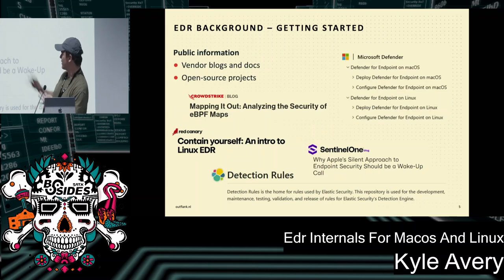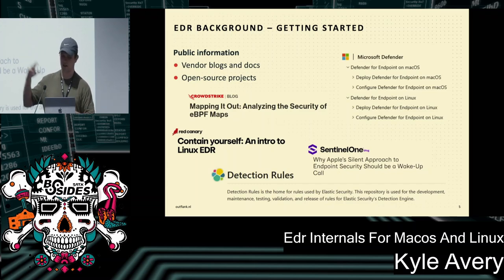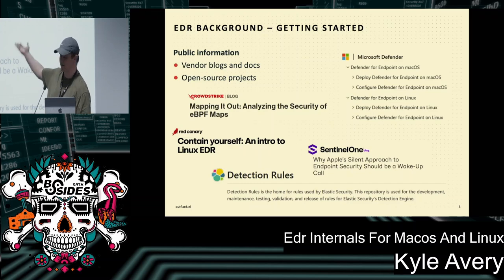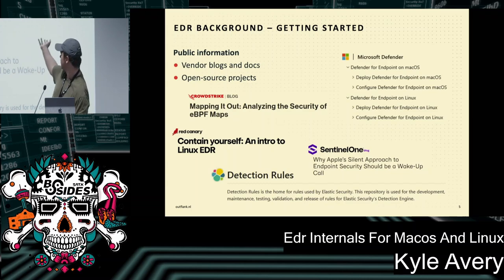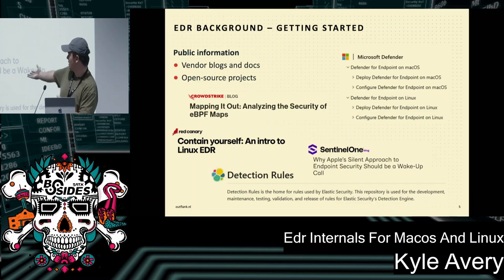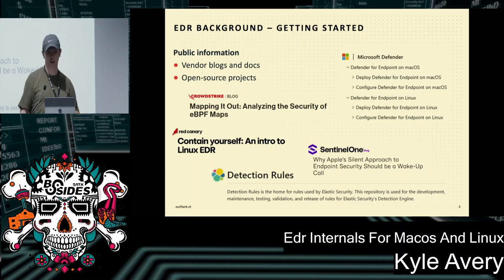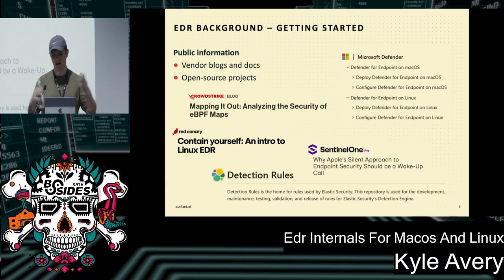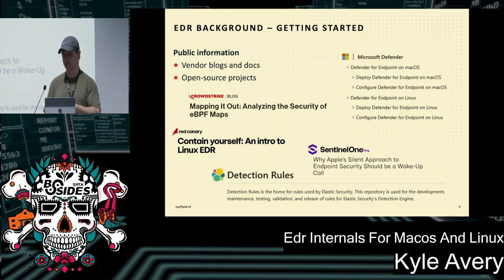If you want to jump into vendor specifics, there's a lot of public information. Almost all vendors have blogs about challenges they ran into or complaints about the OS vendors. Some publish documentation about installing the agent that reveals limitations or requirements. Some even have open source projects — Elastic has a repo called Detection Rules with default antivirus rules that tell us about event types, fields, and what data is collected.